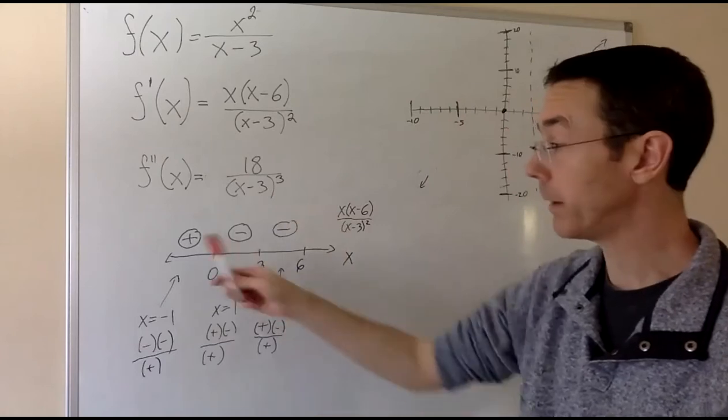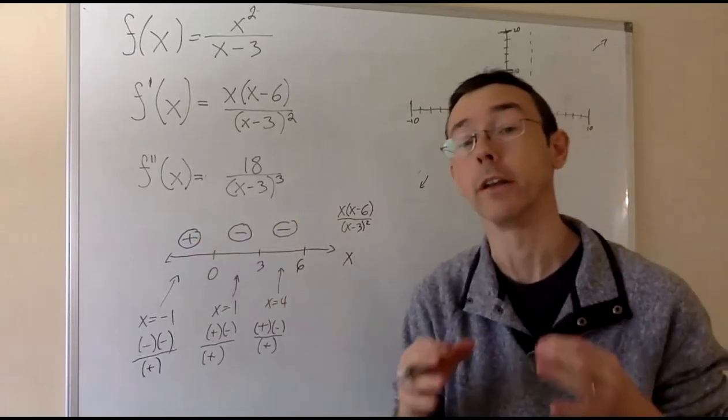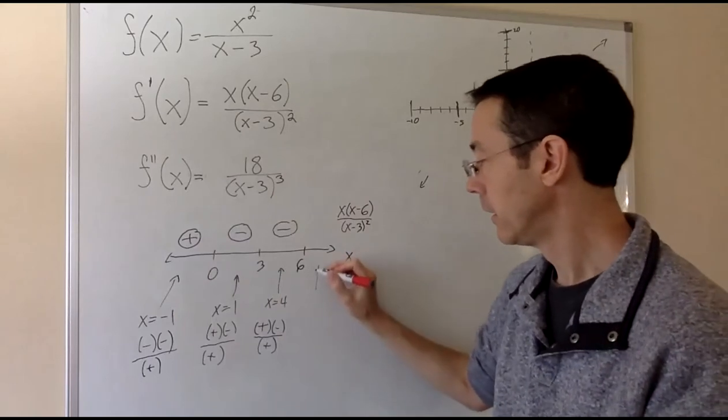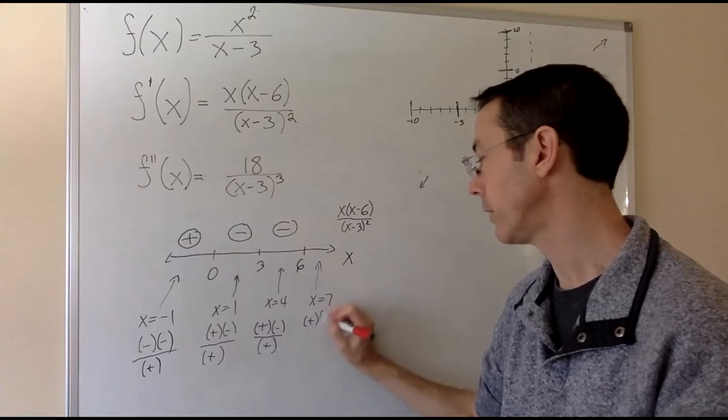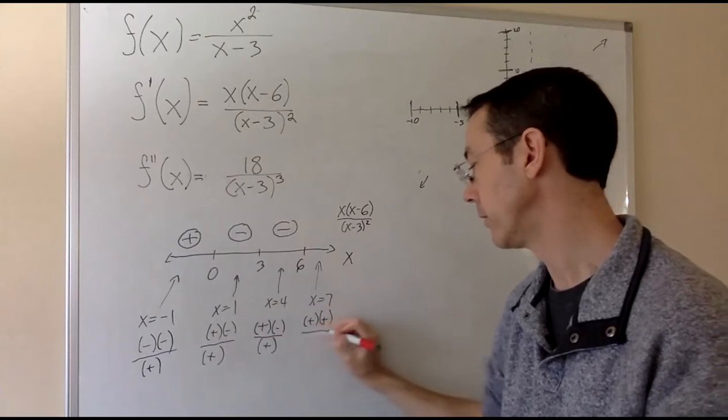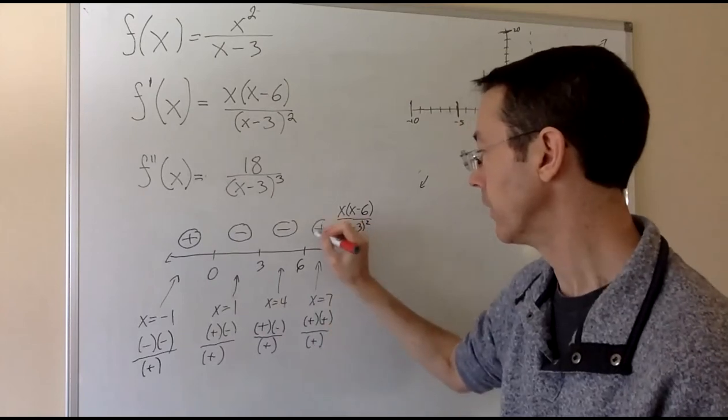You can't assume it's just going to go positive, negative, positive, negative. It doesn't always have to alternate. You've got to check a point in each interval. Finally, we look at x equals 7, and we get a positive times a positive over a positive. The derivative is positive there.